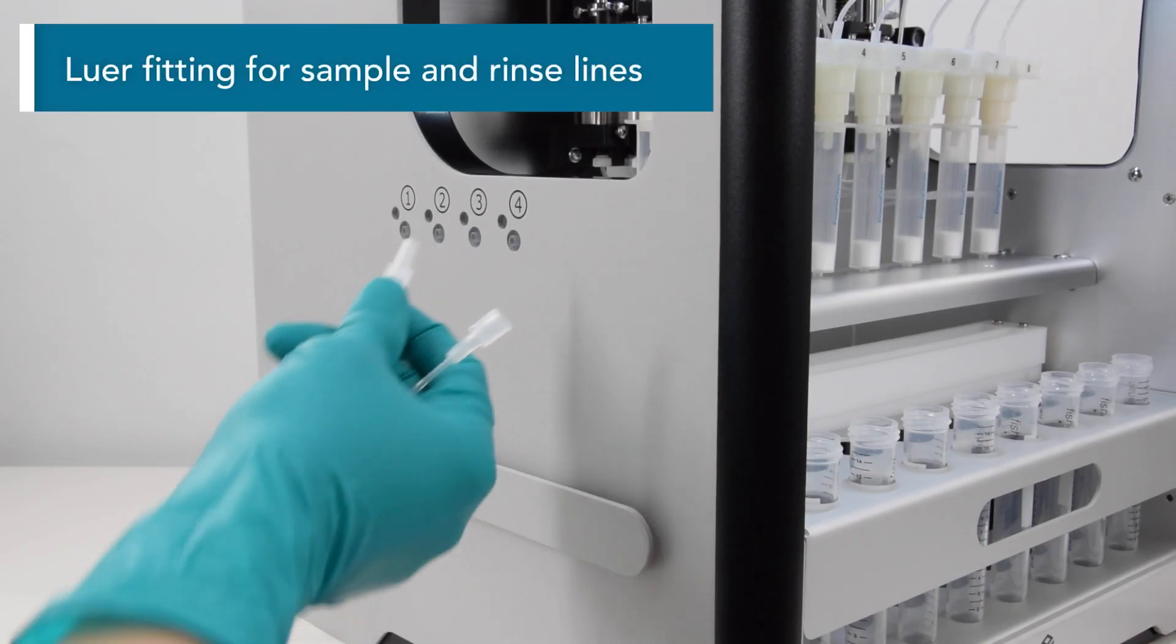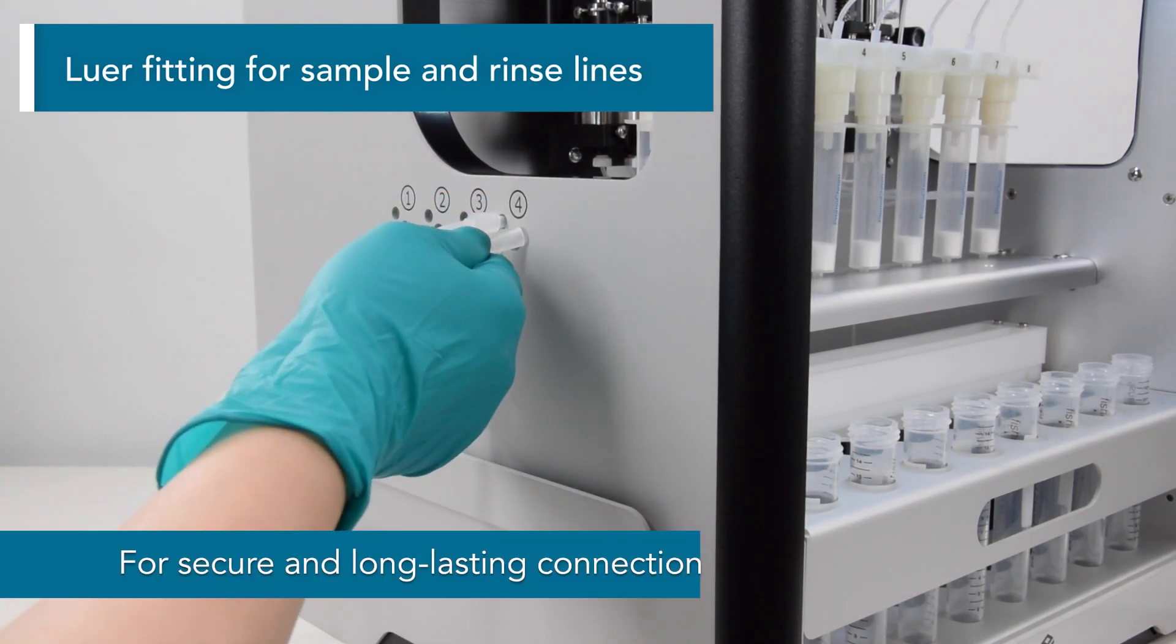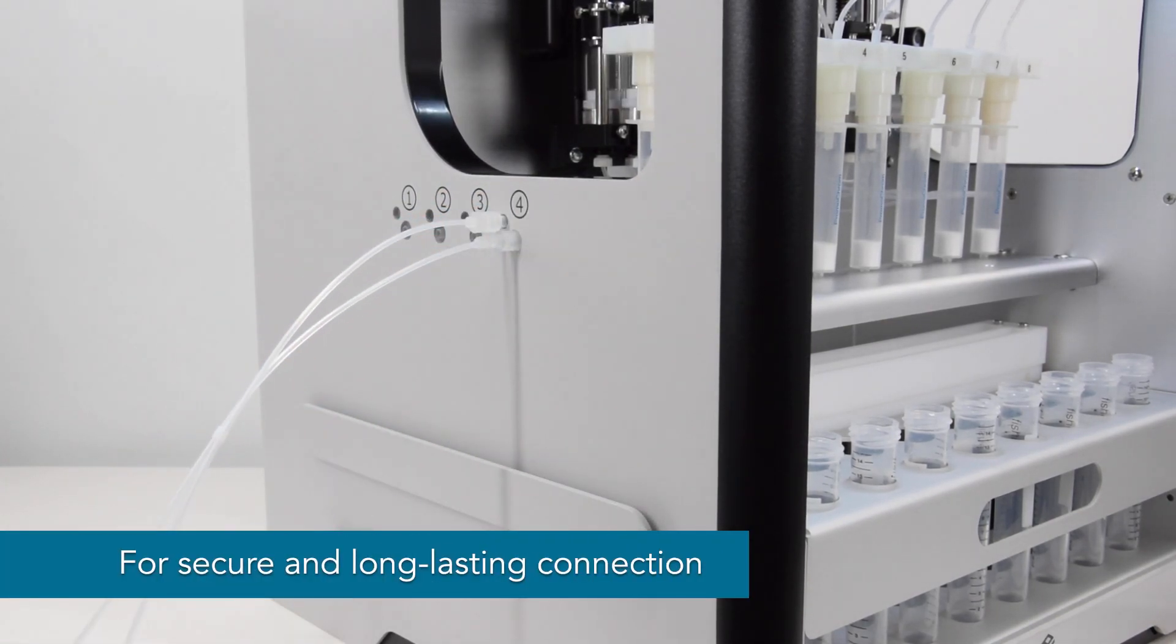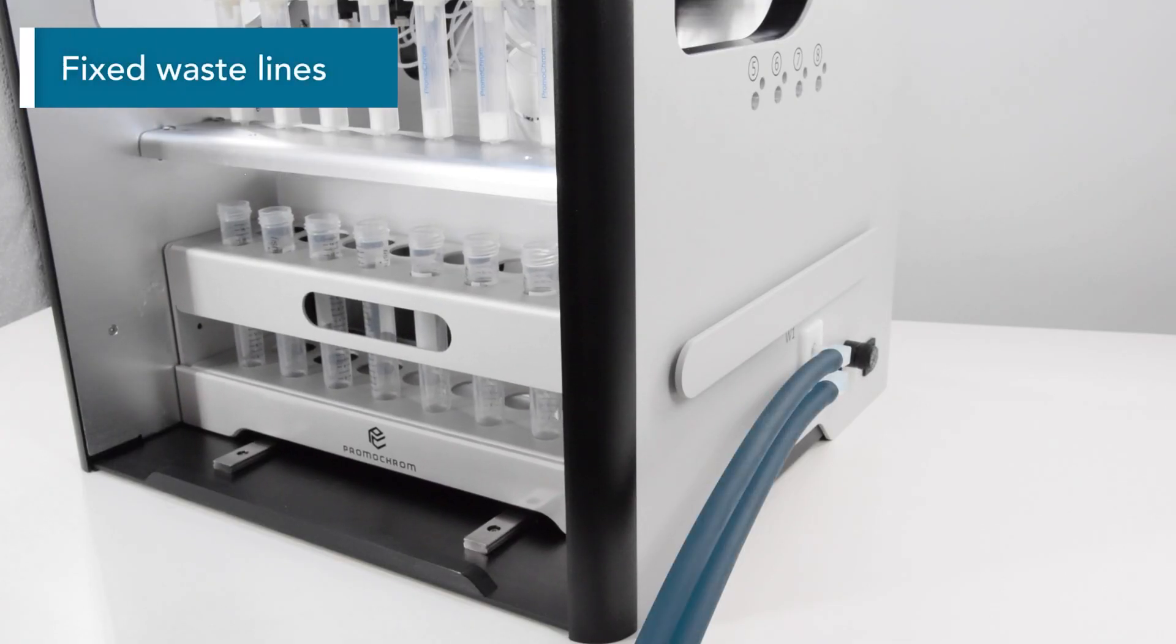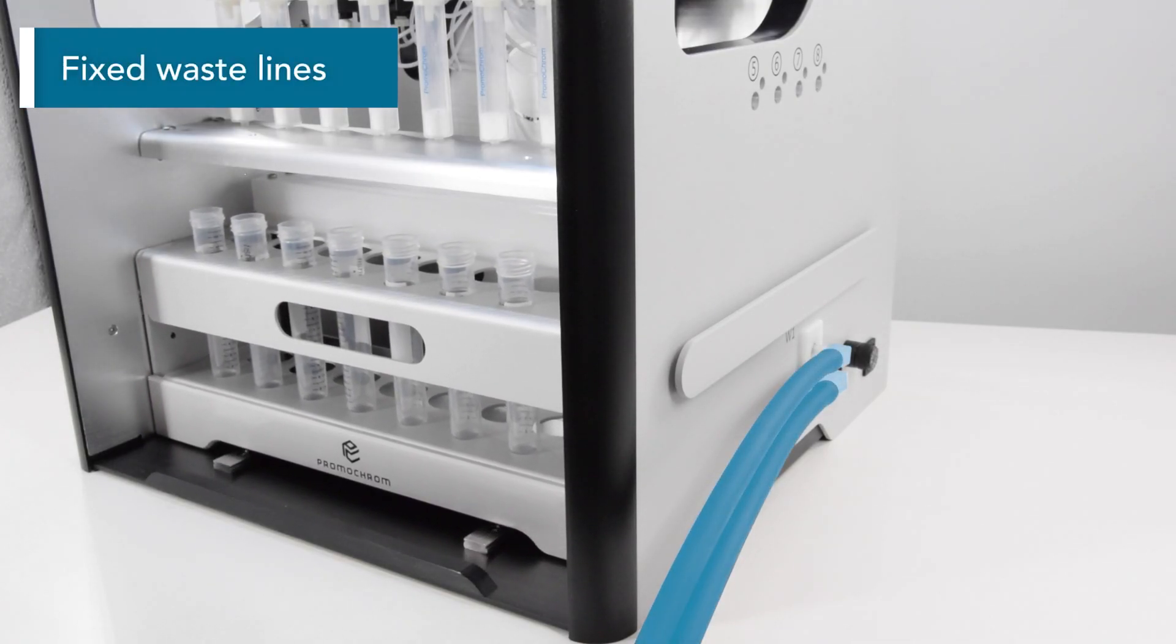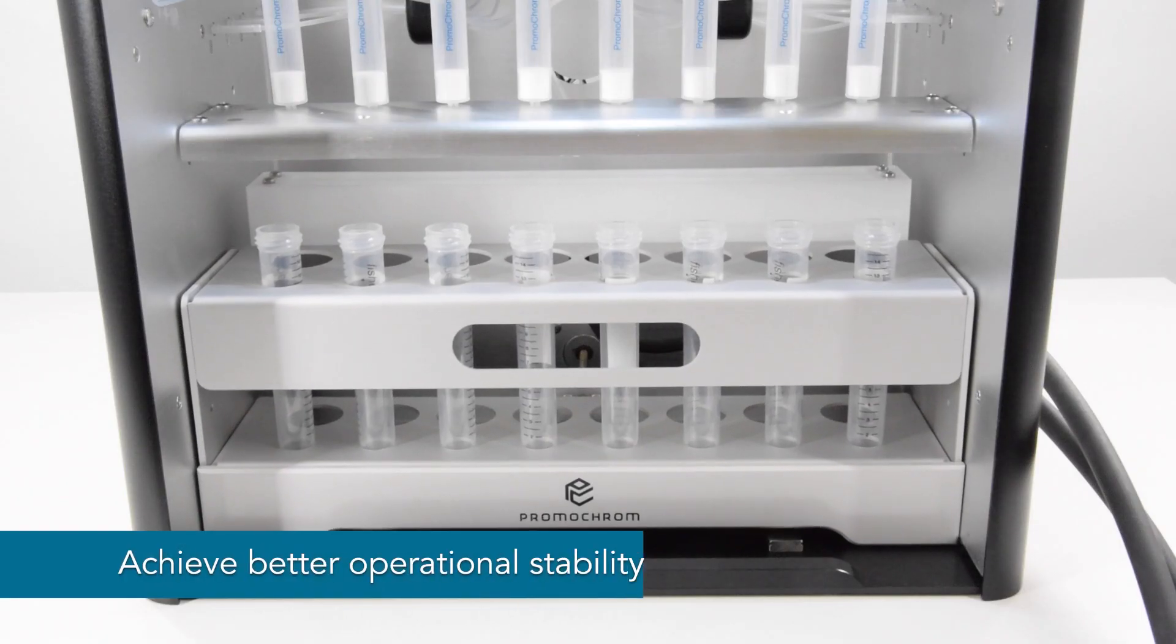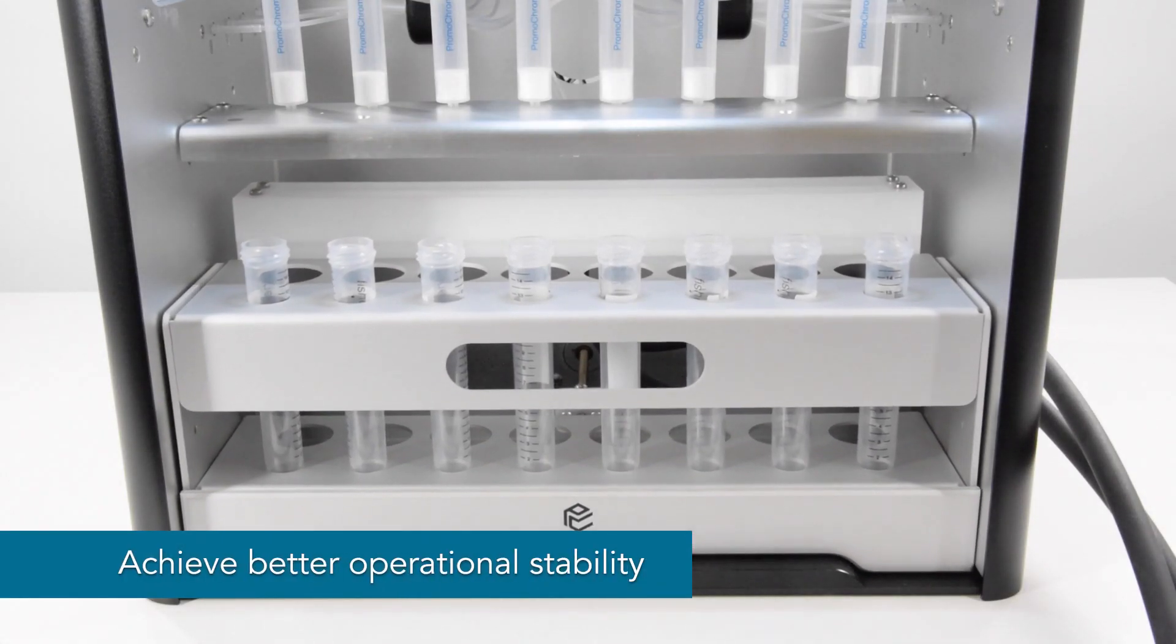The sample and rinse lines now use lure fittings for more secure and long lasting connection. The waste lines are now fixed to the casing. By decoupling them from the fraction rack, it prevents any interference during operation.